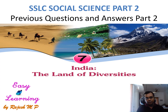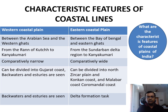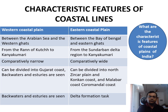Now we can move on to the first question of this chapter. I always try to explain the questions and answers in Malayalam also, for all students to easily follow. What are the characteristic features of coastal plains of India? The first one is the Western Coastal Plain, located between the Arabian Sea and the Western Ghats.